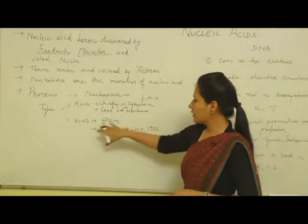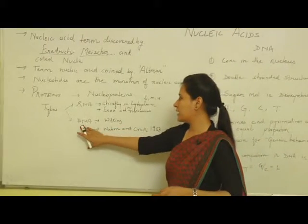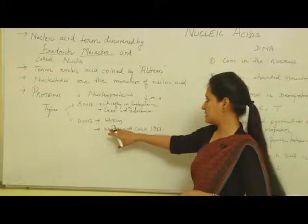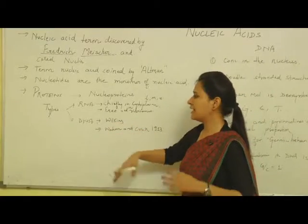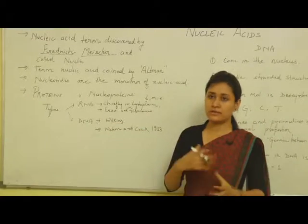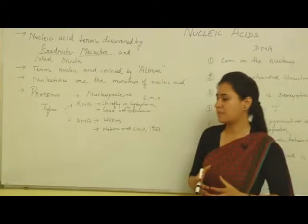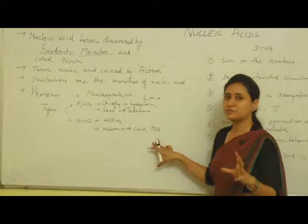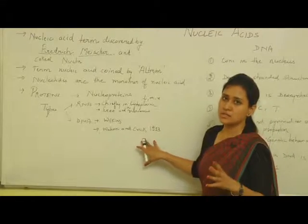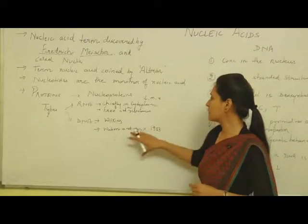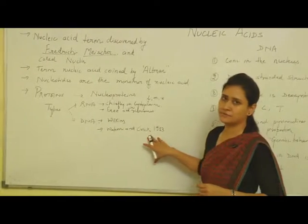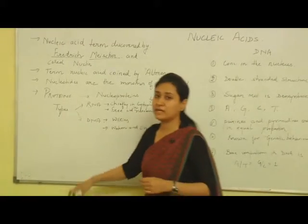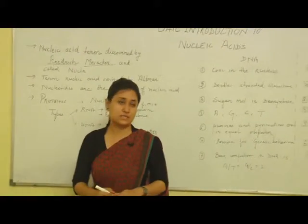DNA is deoxyribonucleic acid. The term was given by Wilkins, and later, after a lot of discovery was done, a proper model was proposed by Watson and Crick in 1953. So, these are the two main types of nucleic acids.